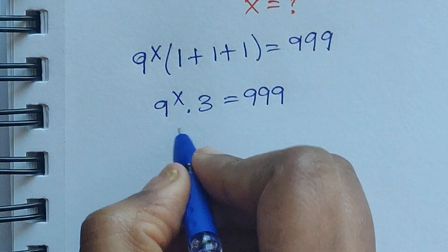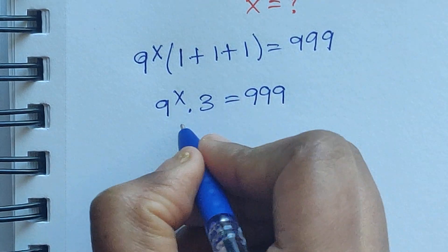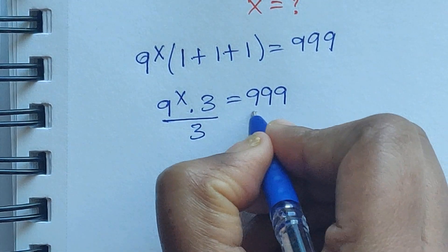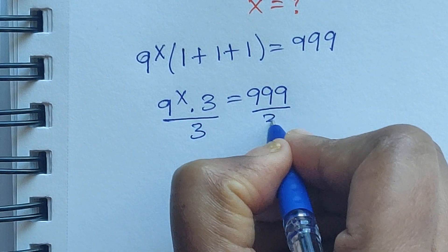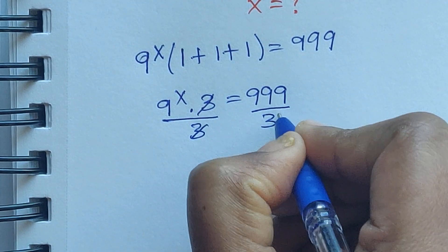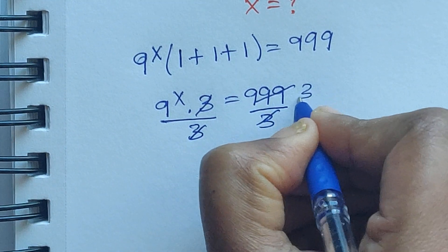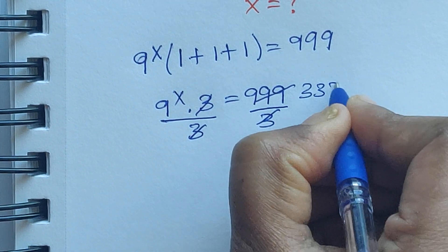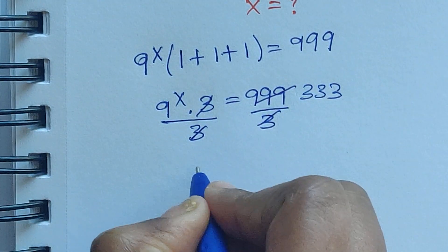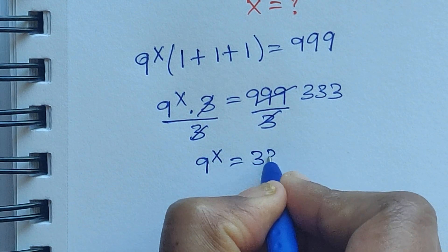Now divide by 3 on both sides. So the 3 on the left gets cancelled. 999 divided by 3 equals 333. So 9 to the power of x equals 333.